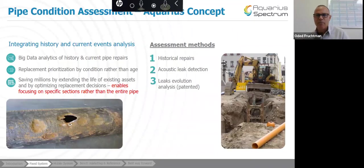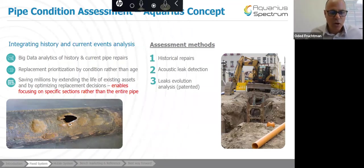Now let's talk, since we talked about the background, let's talk about the Aquarius concept. So what we try to do here is integrate history. We can't ignore history of breaks, but we wanted to combine this with current event analysis of many many parameters that we collect over time. So it's a big data analytics of history and current pipe repairs. Our solution would highlight and would enable the water utility to replace and pre-authorize the condition based on the condition rather than age, and will save millions by extending the life of existing assets and optimize replacement decisions. It enables focus on replacing specific sections. You don't have to, sometimes you don't have to replace the entire pipe with just a small section of the pipe.